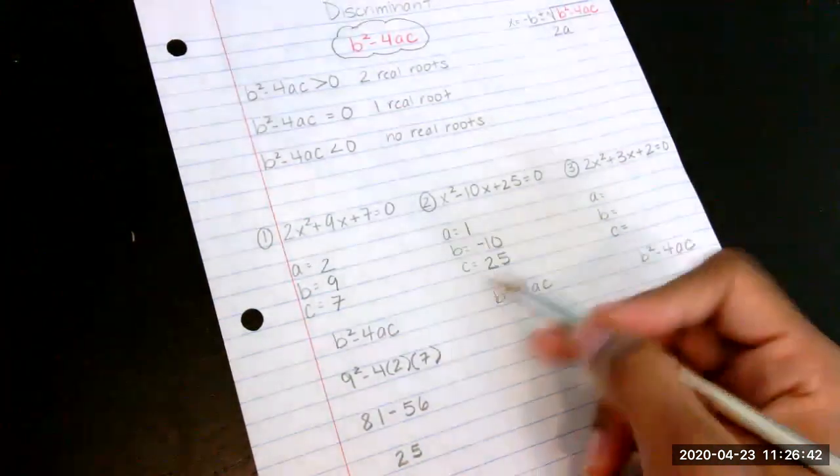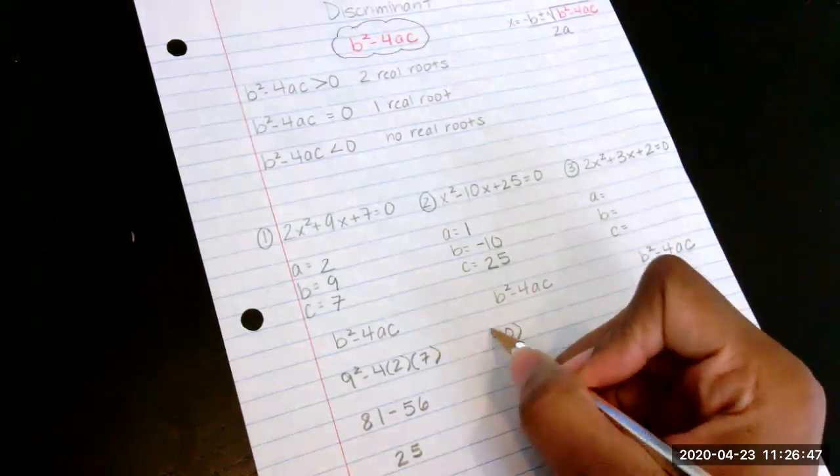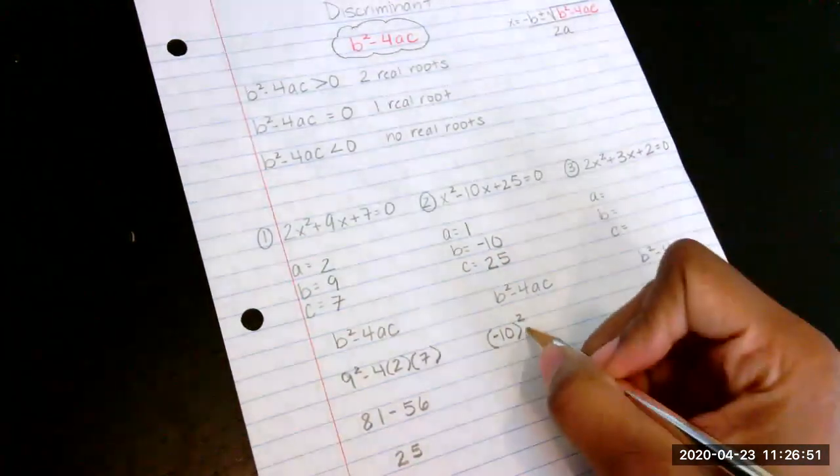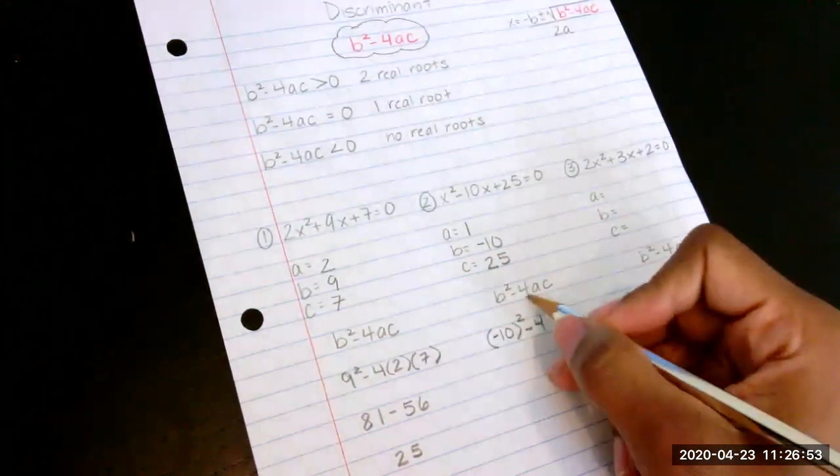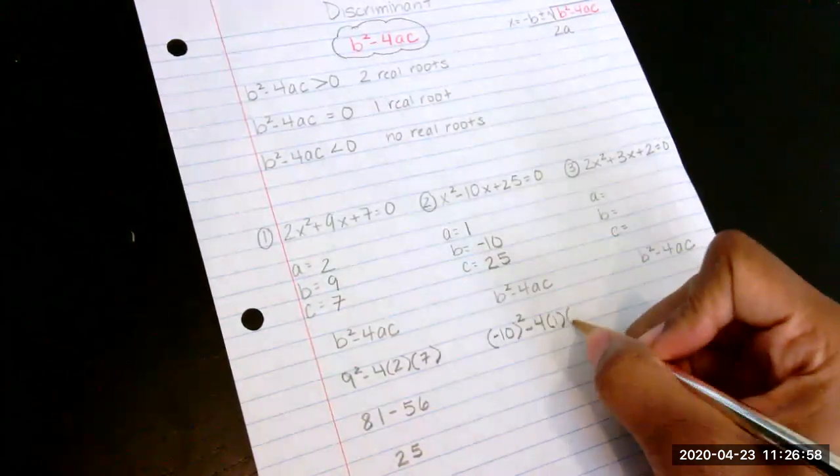I'm going to plug these values into the formula. So it says b squared. Remember how we talked in the other video about having a negative number and squaring it. You have to put it in parentheses. Minus 4, that stays the same. And then our a in this case is 1, and our c in this case is 25.